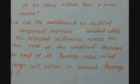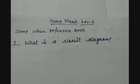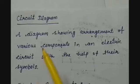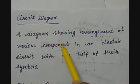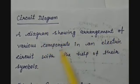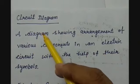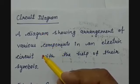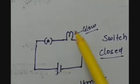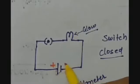In the homework of lecture number 2, we were having four questions in total from a reference book. Question number 1 was: What is a circuit diagram? The answer is: A circuit diagram is a diagram showing the arrangement of various components in an electric circuit with the help of their symbols. You can also make one diagram which shows the arrangement of various components like a switch, battery, a load, or a conductor.